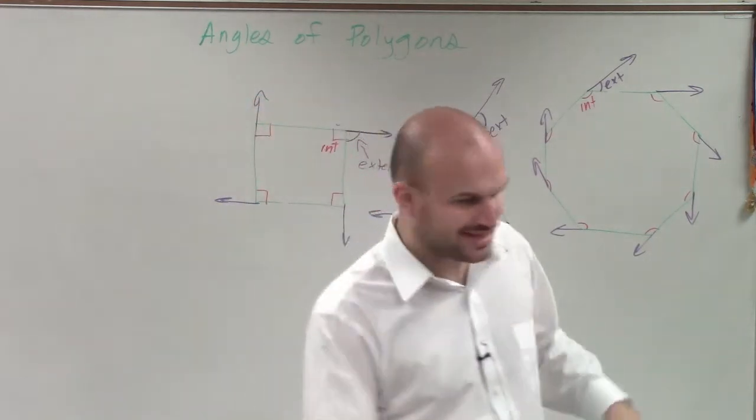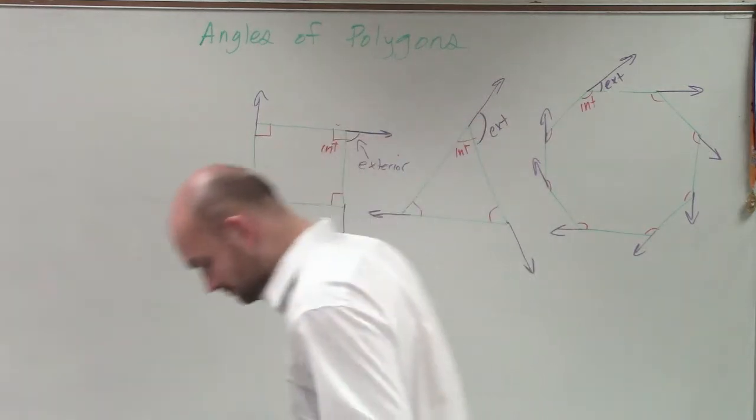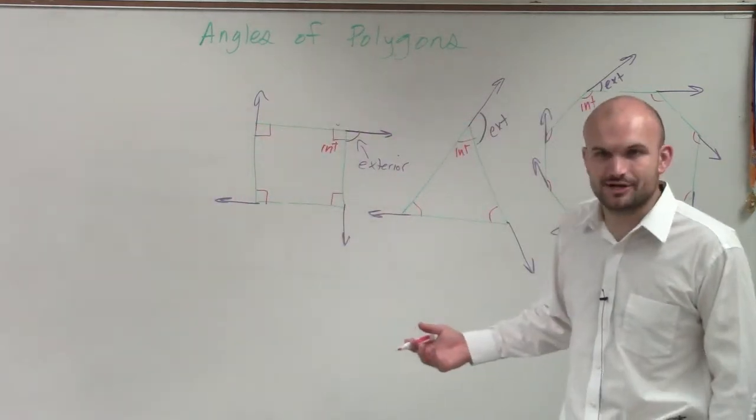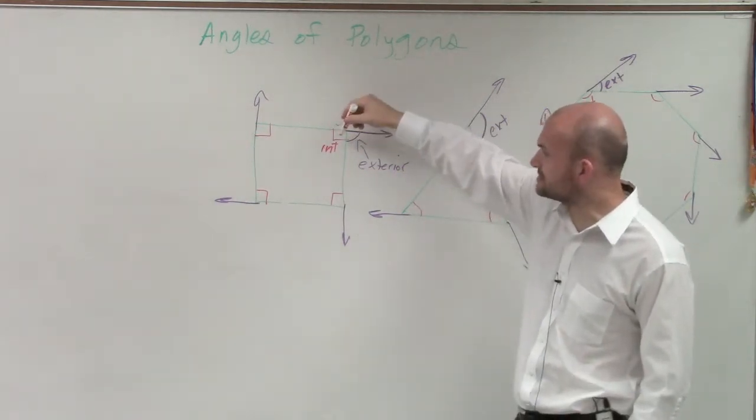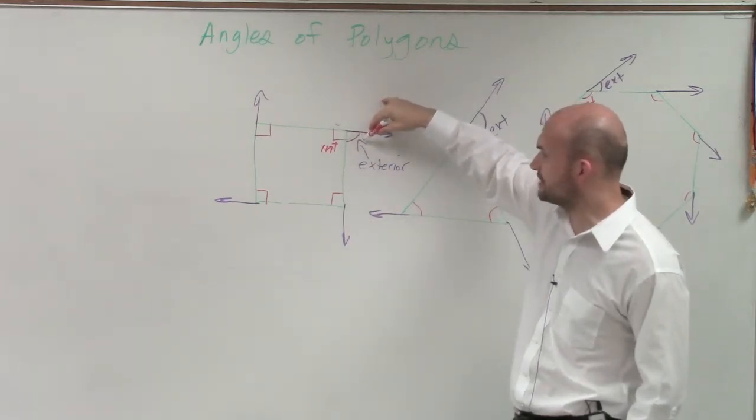So what we need to do is rather than trying to think about all of them, we have that nice little formula for interior. Let's just go and talk about what is going to be the sum of one interior angle, or one exterior angle. So if this is a square, then if here's 90 degrees, what would you have to say this one's going to be, Nick?